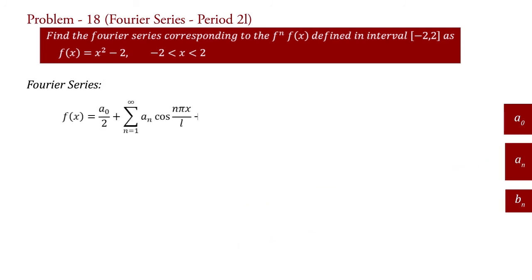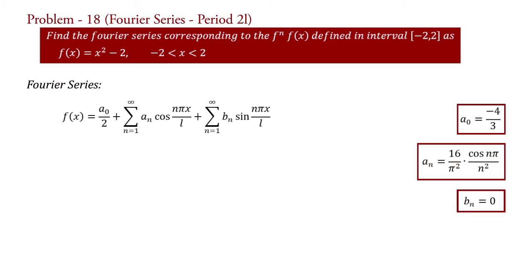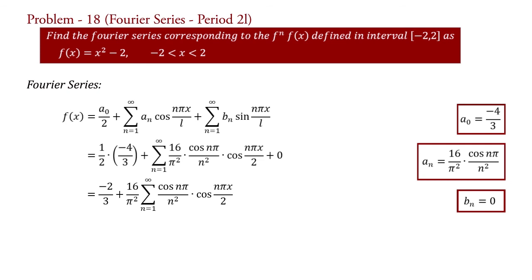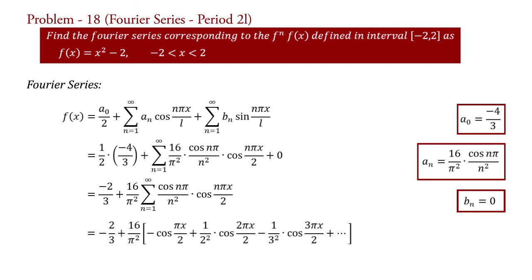Now the Fourier series is f of x equal to this. Substituting the values of a0, a_n, and b_n, we have f of x equal to 1 upon 2 into minus 4 by 3 plus summation n equal to 1 to infinity of 16 upon pi squared times cos n pi upon n squared into cos n pi x upon 2 plus 0. Simplifying, f of x equal to minus 2 upon 3 plus 16 upon pi squared summation n equal to 1 to infinity of cos n pi upon n squared into cos n pi x upon 2. Taking n equal to 1, 2, 3 and so on, we get f of x equal to minus 2 upon 3 plus 16 upon pi squared into minus cos pi x upon 2 plus 1 upon 4 into cos 2 pi x upon 2 minus 1 upon 9 into cos 3 pi x upon 2 plus so on.